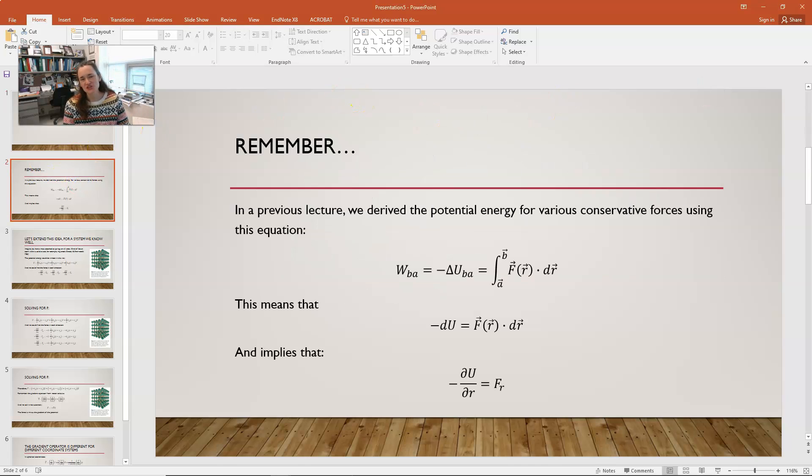Okay, so in the previous lecture that you should watch if you haven't already, we derived the potential energy for various conservative forces, and we used the equation that the work, if you're going to move a particle from position A to position B, the work done by a force F when you do that is, of course, equal to the integral from position A to position B of the force dotted with the displacement, and then you integrate over the path.